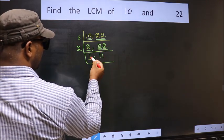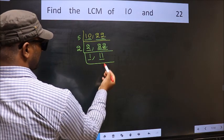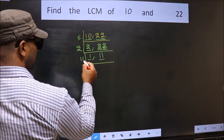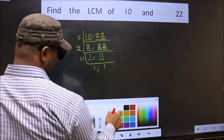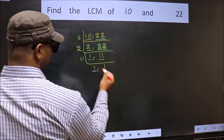Now we got 1 here. So focus on the other number, 11. 11 is a prime number. So 11 times 1 is 11. So we got 1 in both the places.